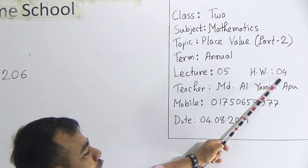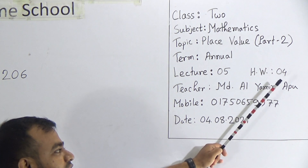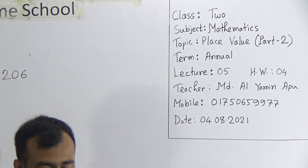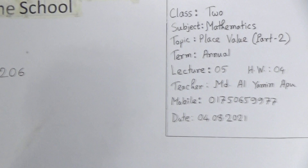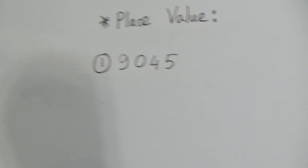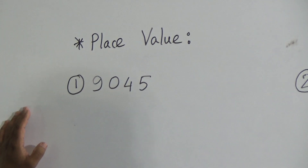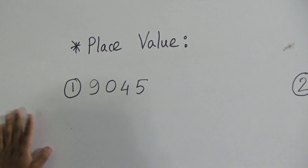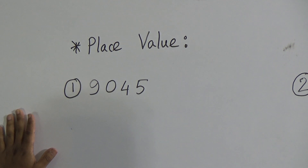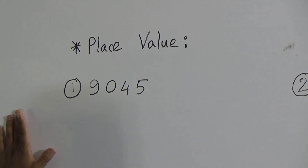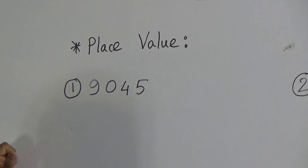Our today's topic is Place Value, Part Two. It's lecture number five, and your homework number is four for the annual term. In the previous class on place value, you learned about what place value is and how to solve place value problems.